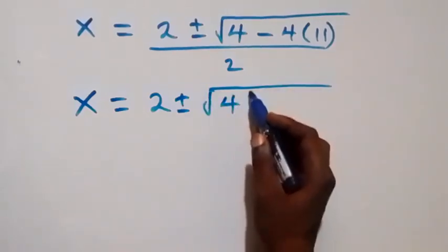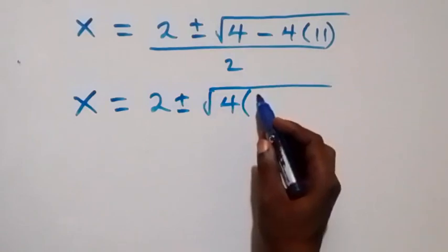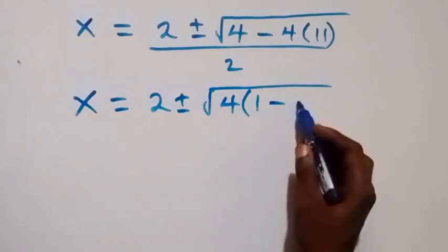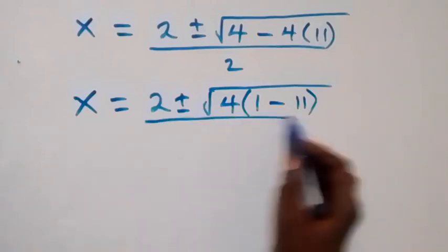...4 into brackets, we have 1 minus 11, over 2.